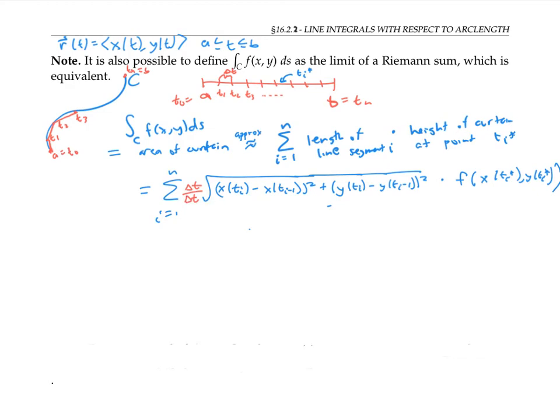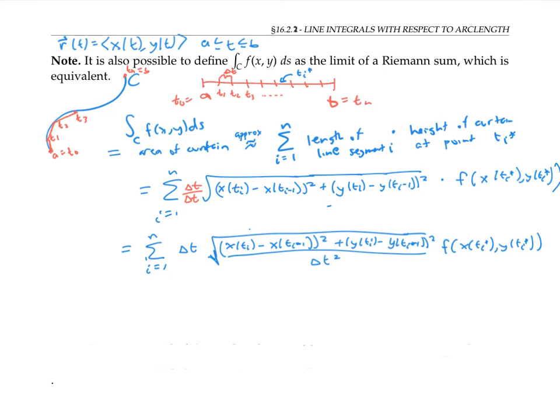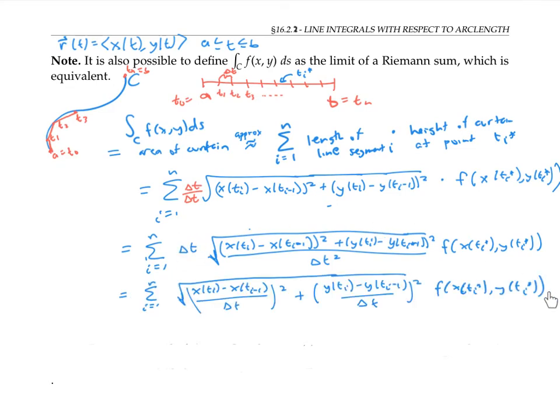So it'll be a delta t squared on the inside. If I rewrite things a little and move this delta t to the end.